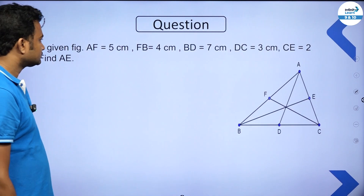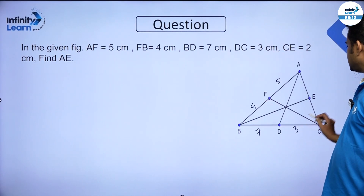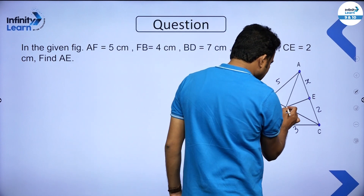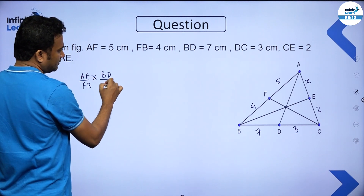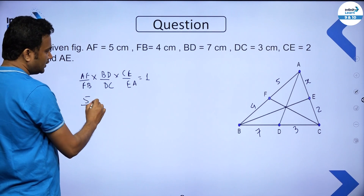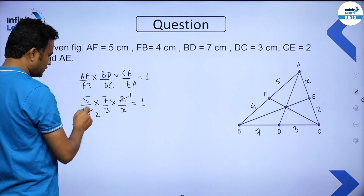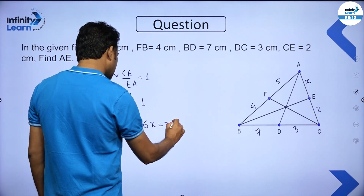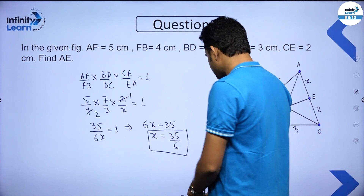Let us solve a question. In the given figure, AF = 5, FB = 4, BD = 7, DC = 3, CE = 2. We have to find AE, that is X. Since all three cevians pass through a common point, we can use Ceva's theorem: AF/FB × BD/DC × CE/EA = 1. So 5/4 × 7/3 × 2/X = 1. That gives 35 × 2 divided by 12X = 1, so 6X = 35, meaning X = 35/6. That is your answer.